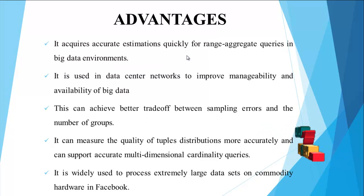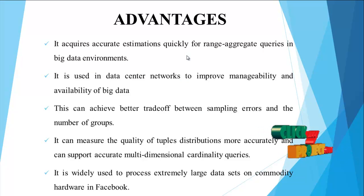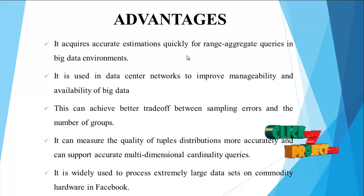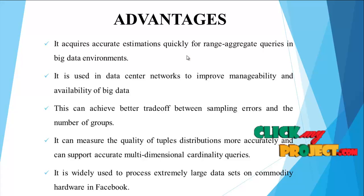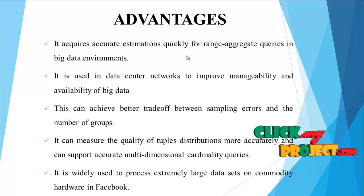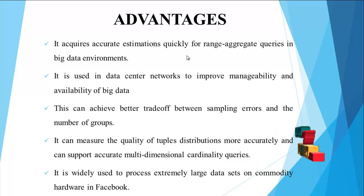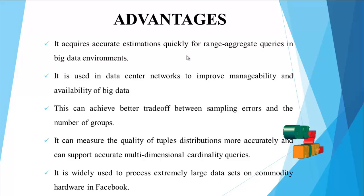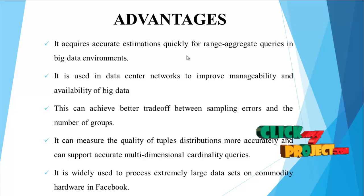Advantages: In the proposed system, it acquires accurate estimation quickly for range aggregate queries in big data environments. It is useful in data-centered networks to improve manageability and availability of big data. This achieves a better trade-off between sampling errors and the number of groups. It can measure the quality of the tuples distribution more accurately and can support accurate multidimensional cardinality queries. It is widely used to process extremely large data sets on commodity hardware, such as in Facebook.